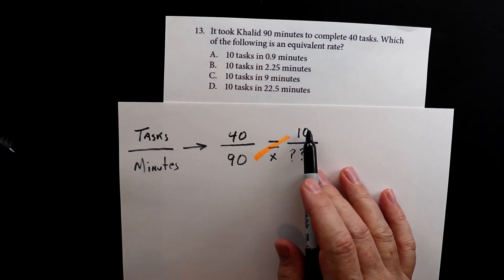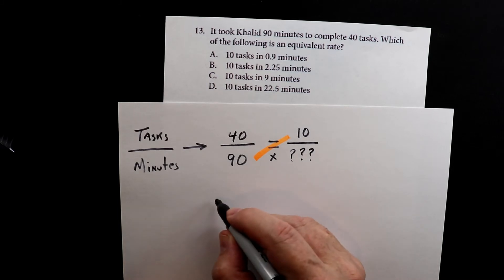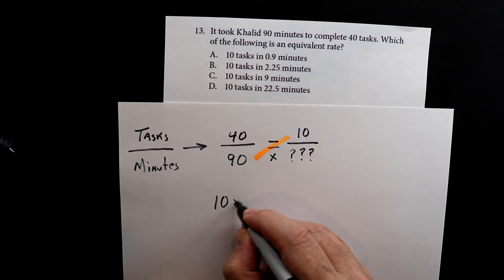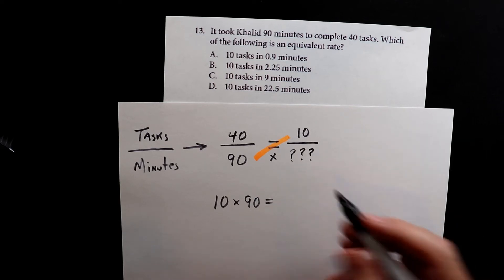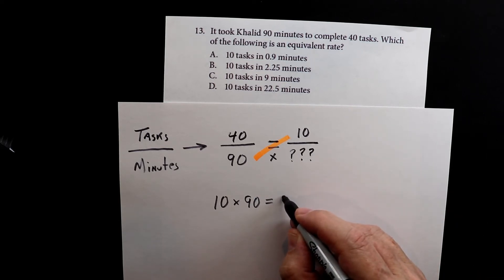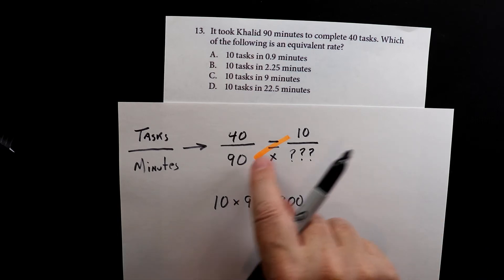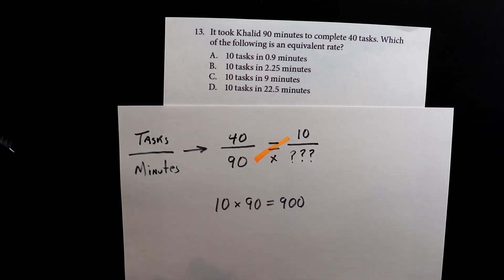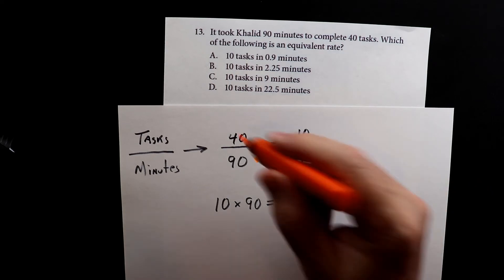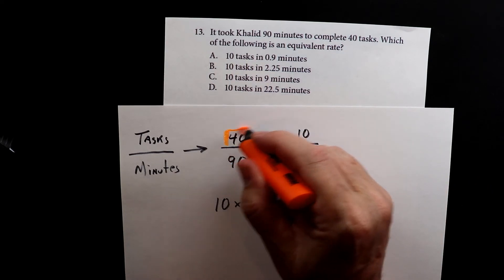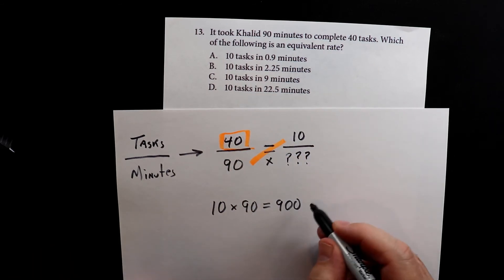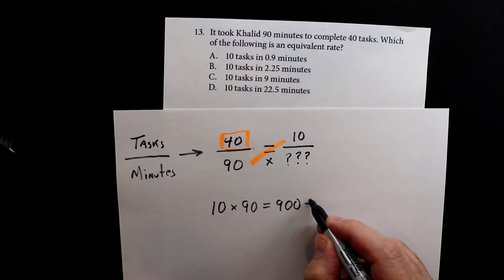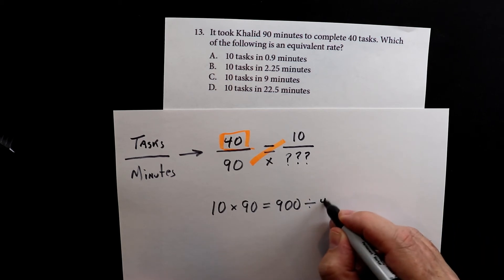So we have 10 times 90. 10 times 90 equals 900. And then the last thing we do is we divide by the corner that we have left. So it's 900 divided by 40.